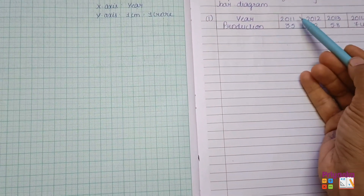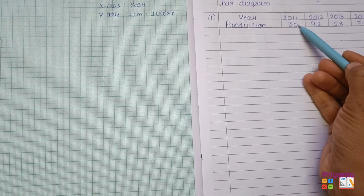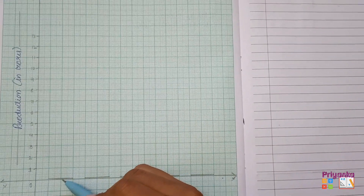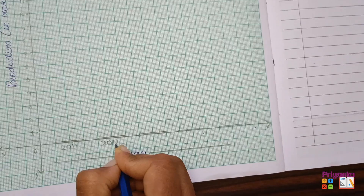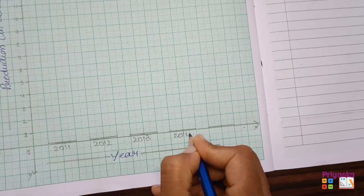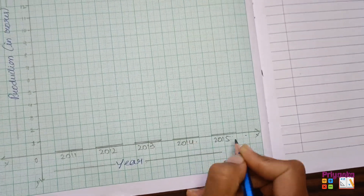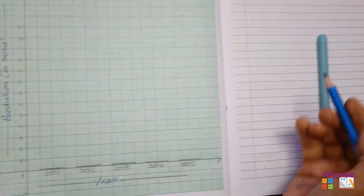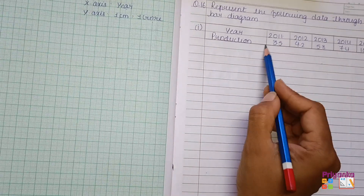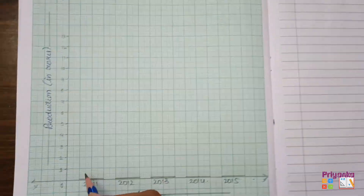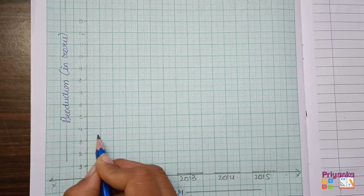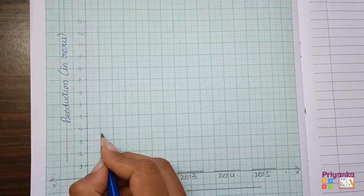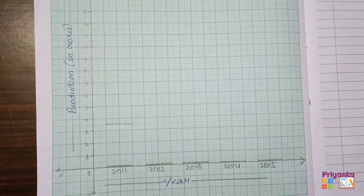After preparing the graph, for 2011 the production is 3.5. Write down the years 2011, 2012, 2013, 2014, and 2015 on the x-axis. For year 2011, the production goes to 3.5, so the bar will go past 3 up to 3.5.